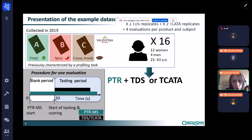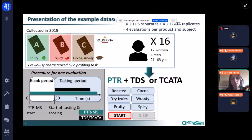As a reminder, in TDS, if you are the subject you put the product in your mouth, then you click on start, then you feel some dry fruit so you click on dry fruits because you think that it is the most dominant sensation, then you think about spicy so you click on spicy, and then you don't feel anything else and you click on stop. So this is the TDS task.